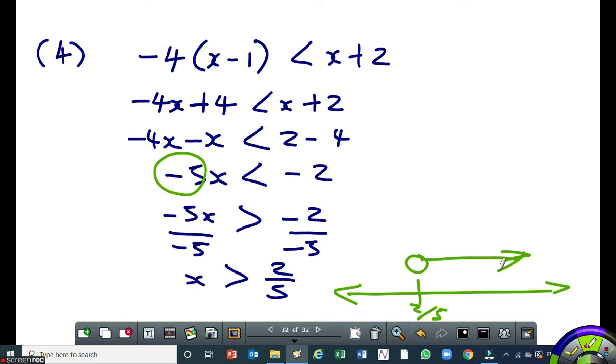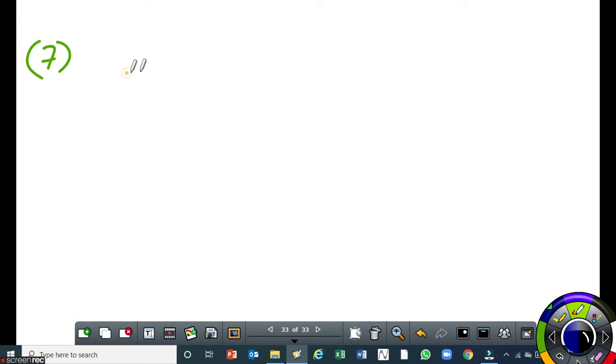Let me do one with double inequalities, then we can go home after that. So, here we have question 7. Minus 5 is less than 2x minus 3, and 2x minus 3 is less than or equal to 7. That's the question. Now, when you have a double inequality, it will seem like we have got two equations.